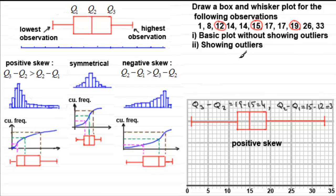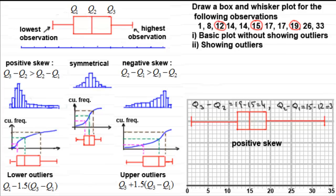Now let's talk about what we mean by outliers. These are particular values which are more than one and a half times the interquartile range (Q3 minus Q1) below the lower quartile or above the upper quartile. We calculate the boundary for lower outliers using: Q1 minus 1.5 times (Q3 minus Q1), and for upper outliers: Q3 plus 1.5 times (Q3 minus Q1). Let's work through this example.